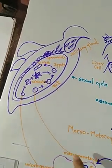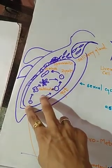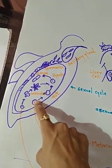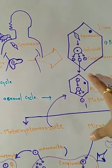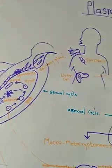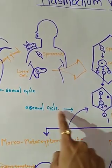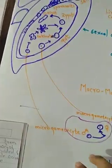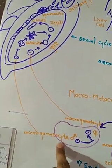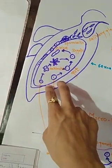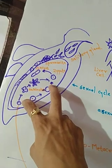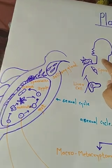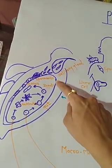Remember, these gametocytes enter into the mosquito, but sexual reproduction does not occur in the human body. In the human body — in the liver cell — that is the asexual cycle. The sexual cycle occurs in the mosquito. The macrogametocyte and microgametocyte enter into the mosquito when the mosquito sucks blood from an affected human, and the gametocytes enter the gut of the mosquito through the blood.